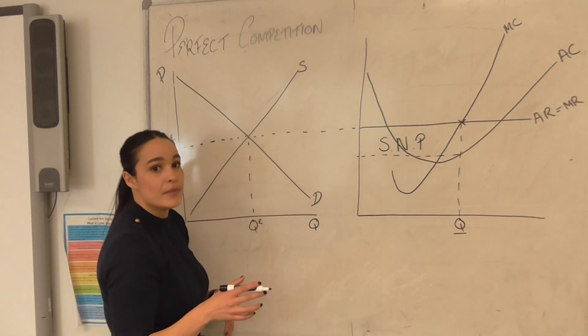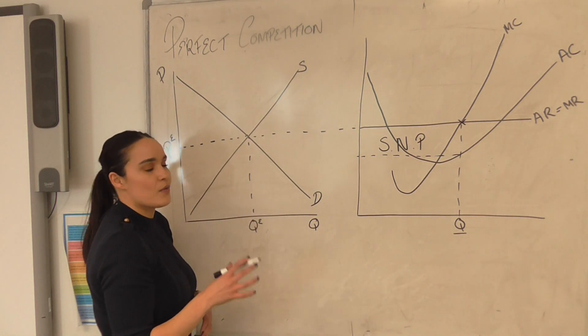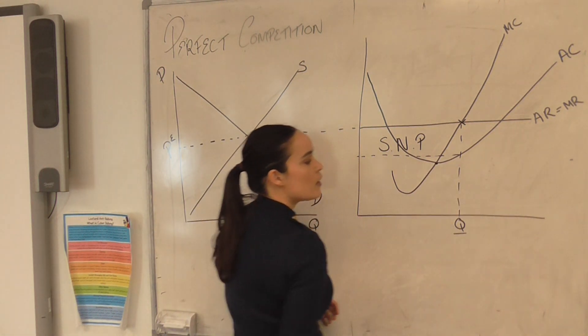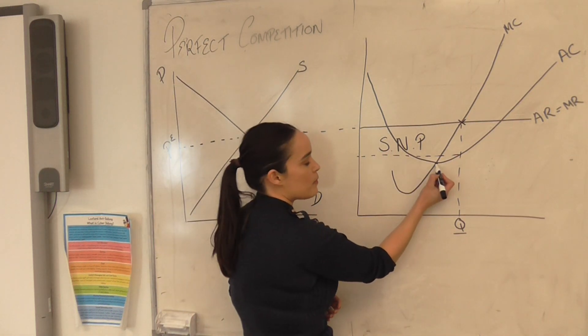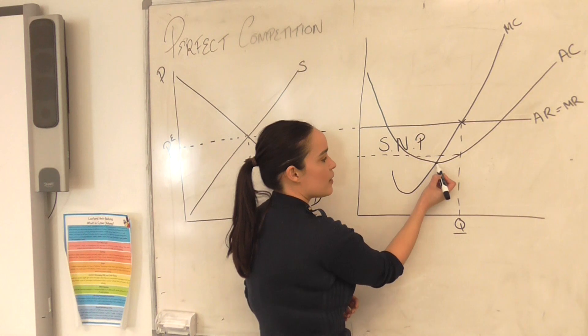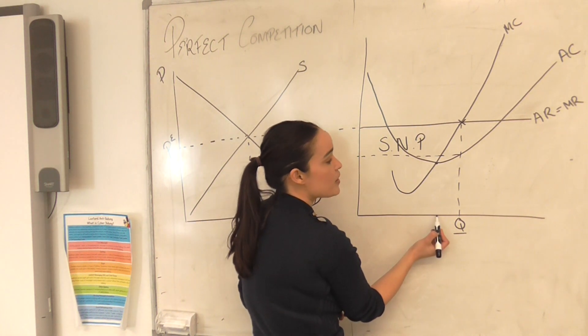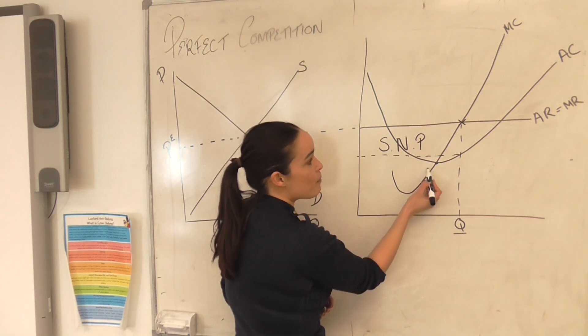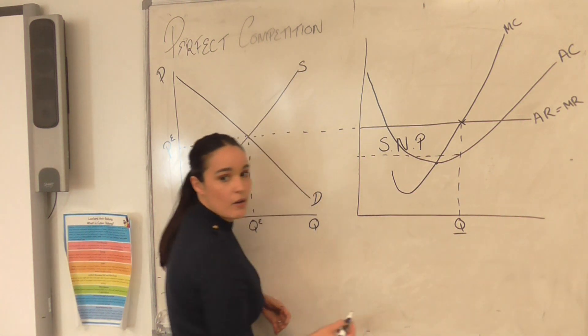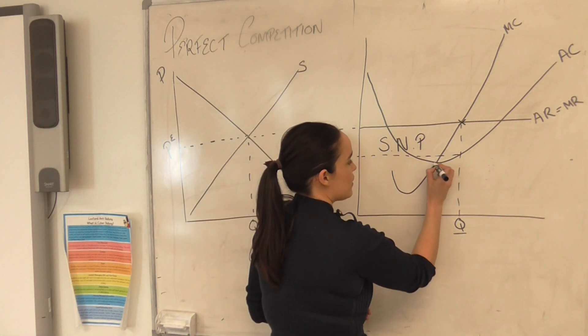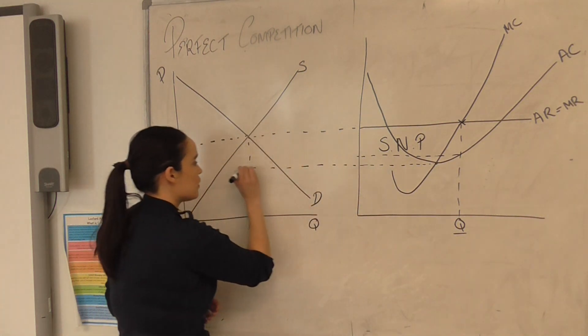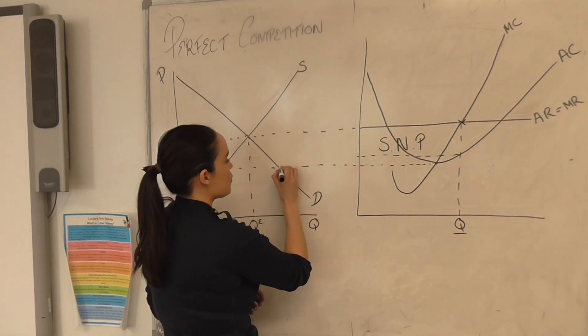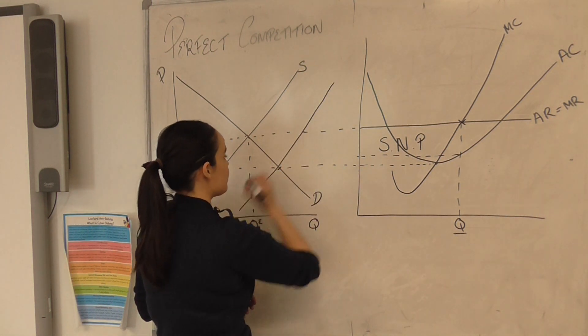So a trick for you in the exam just so you can get this right first time, because you won't be explaining it to anybody. If you take this position here where you know that the firm will be making normal profit, because this will be the minimum amount of quantity that they can sell without making a loss, because anything previous to this their AC will be above their AR, which means they will be making a loss. And actually you can just take this across to here and use that almost as a cheat to know that your supply curve needs to cross at that point.